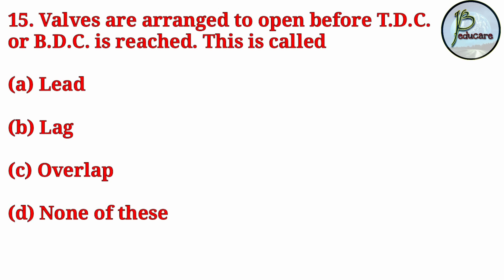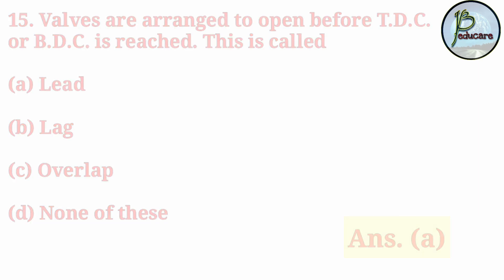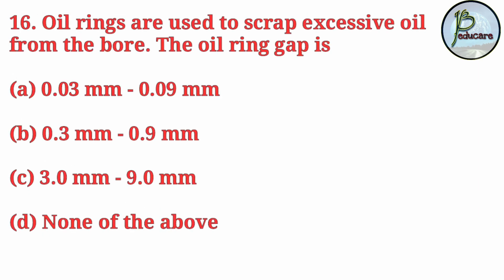Valves are arranged to open before TDC or BDC is reached — this is called? When valves open slightly before TDC or BDC, what is it called? The correct answer is Answer A — lead. And when valves close after TDC or BDC, it is called lag.